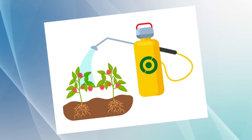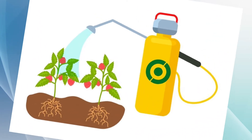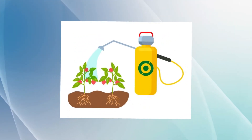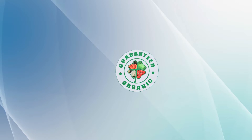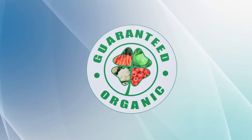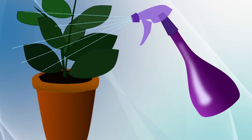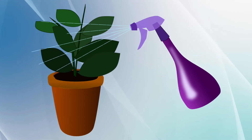Copper is an acidic pesticide and also an organic pesticide. Do not use copper during the flowering stage.